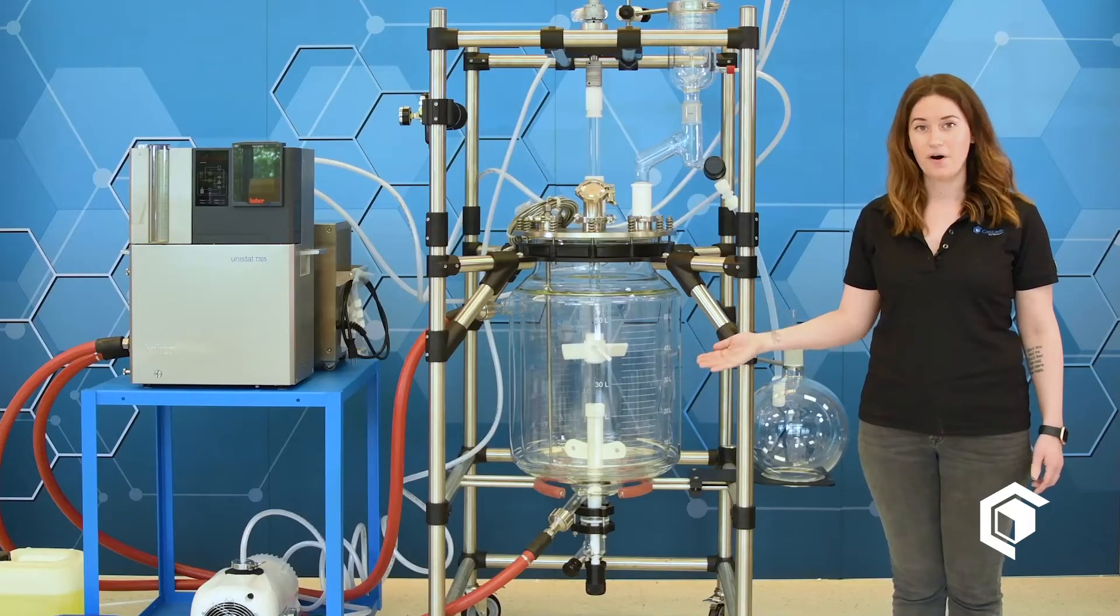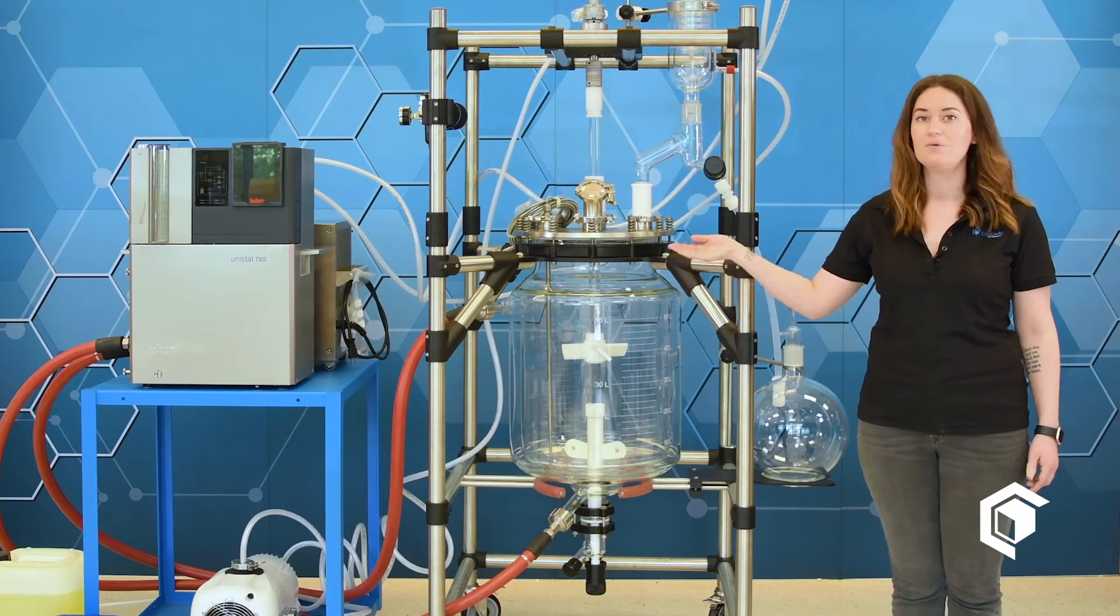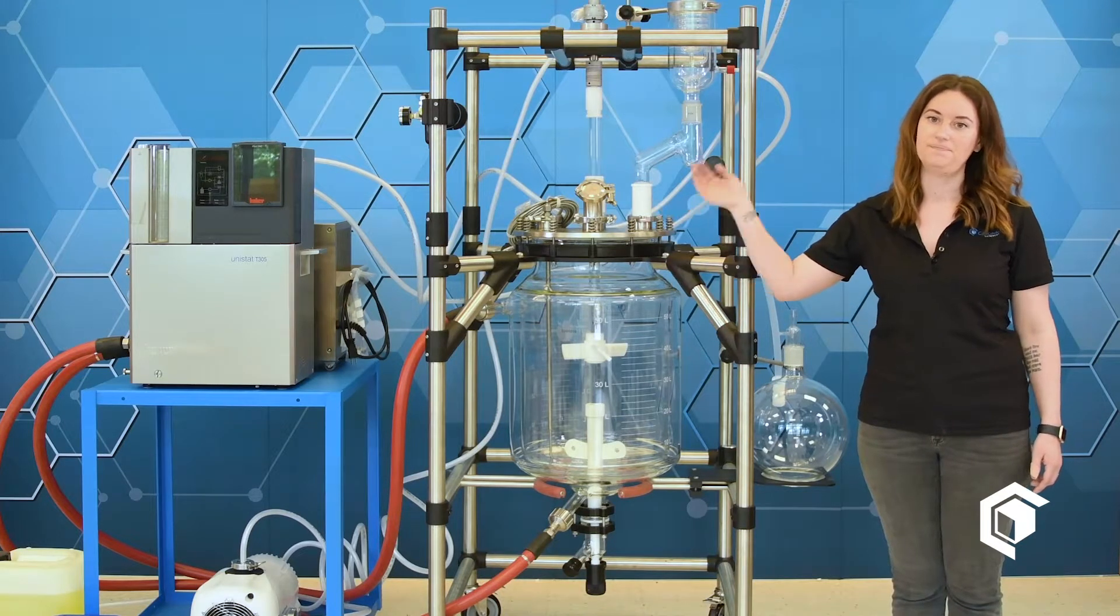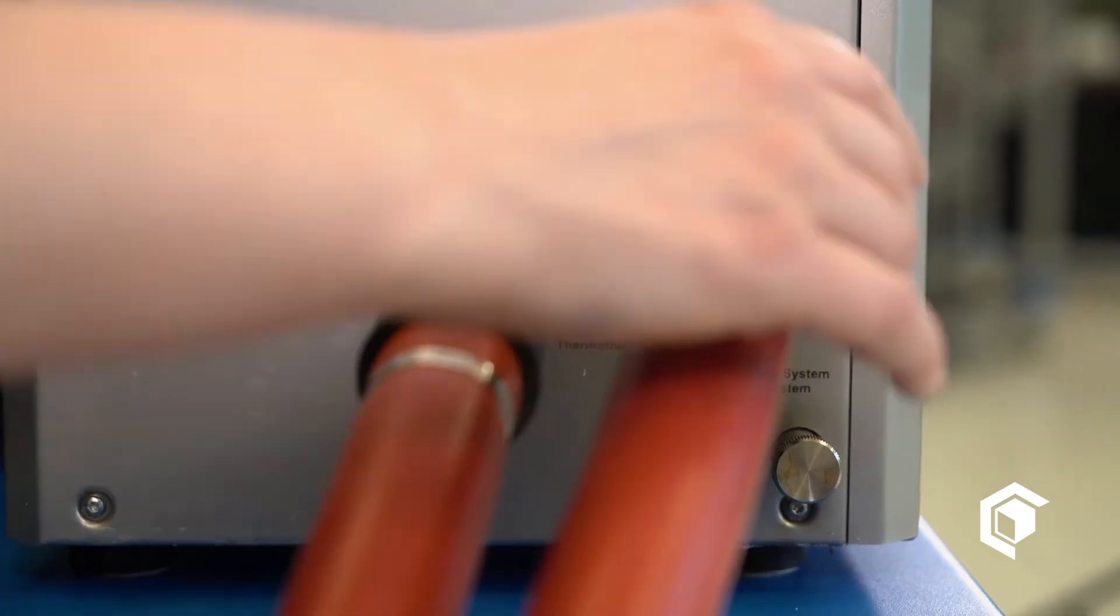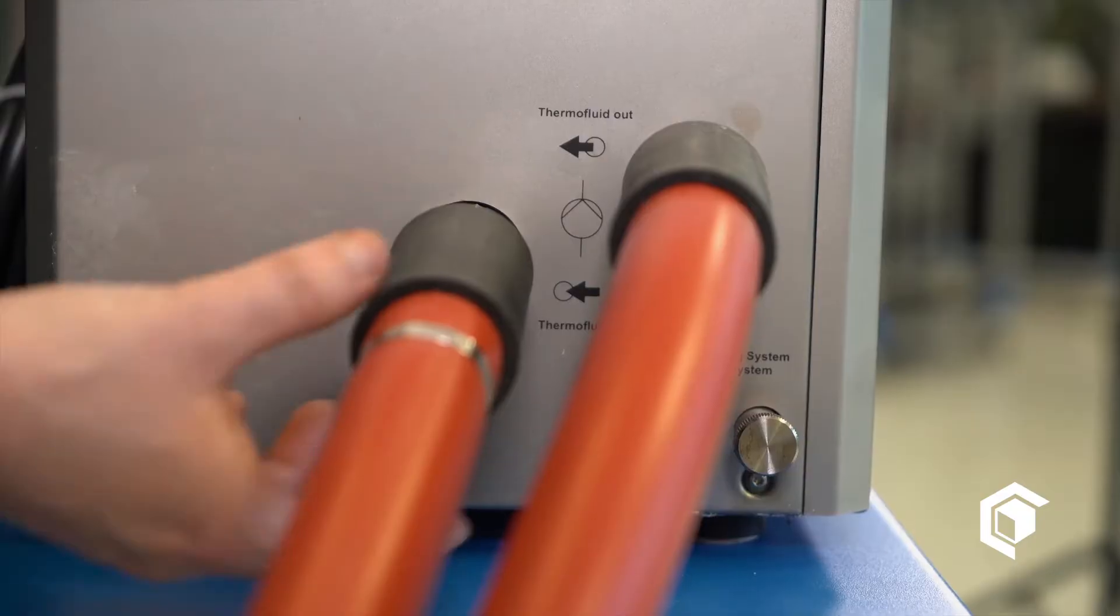Alright, so the first thing we're going to do is connect our TCU to the jacketed reactor. We're going to connect the bottom to the output and then move to the top connected to the input. You want to connect the bottom hose to the out and the top hose to the in.